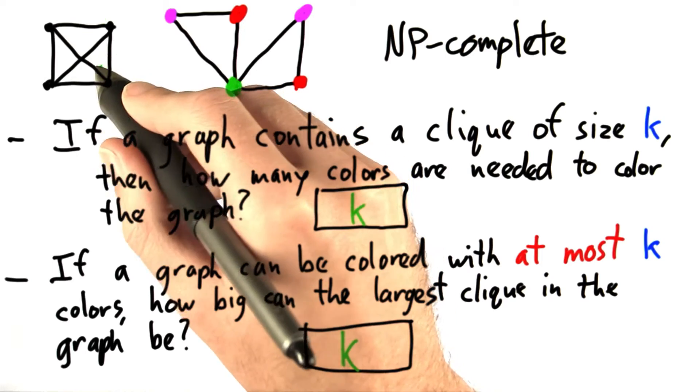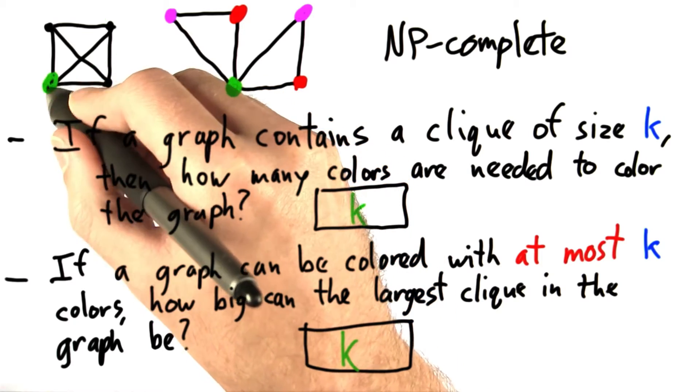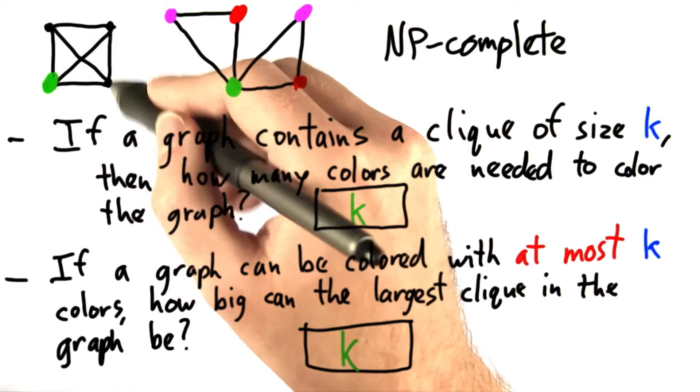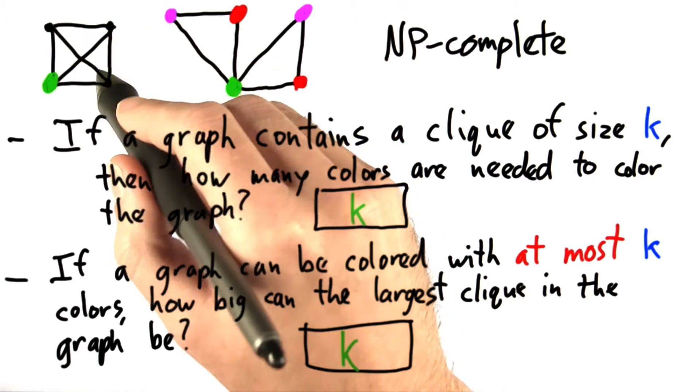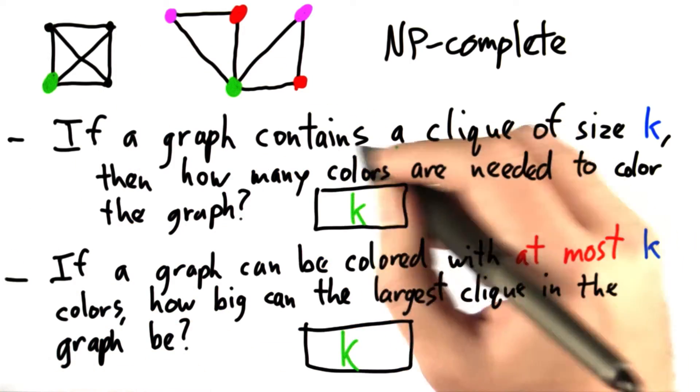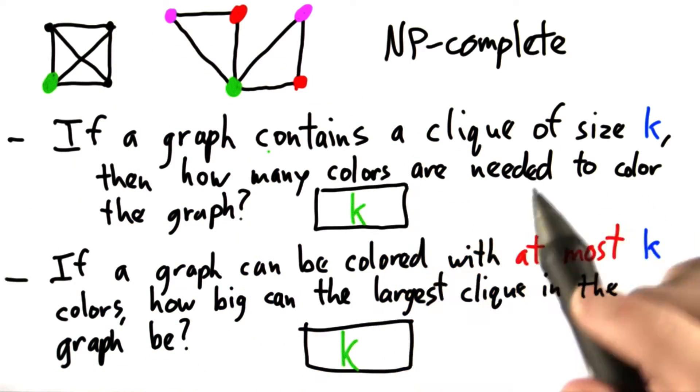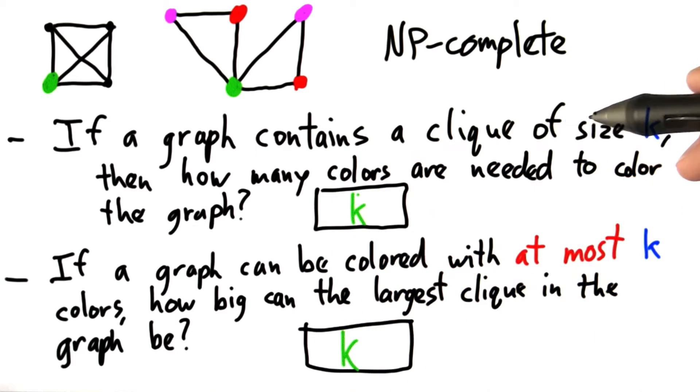So, if we color just one of these vertices like this, well, then we can't color any of the other vertices with that color. So, we need as many colors as are in the largest clique and that would be k.